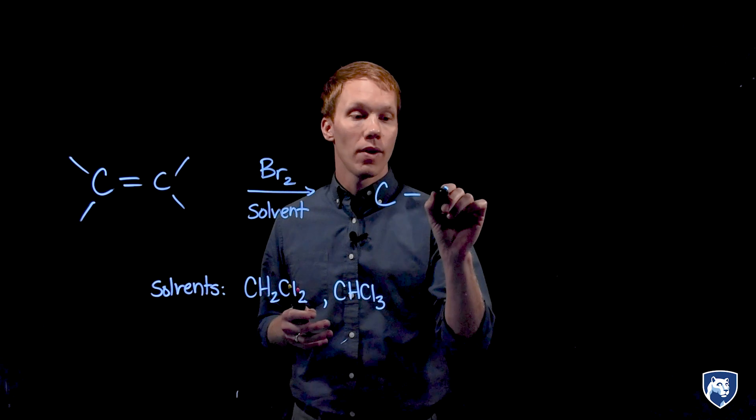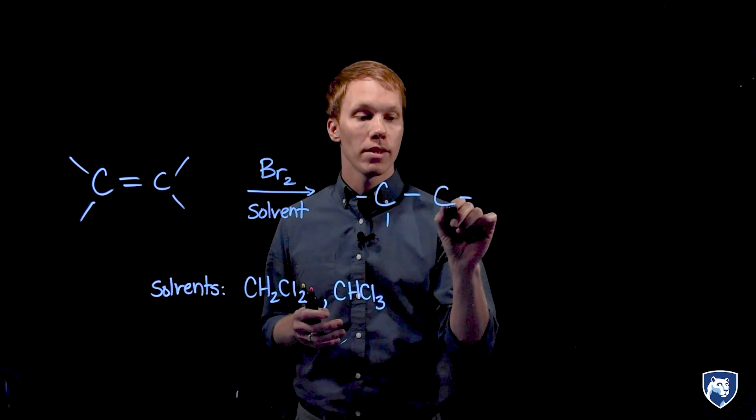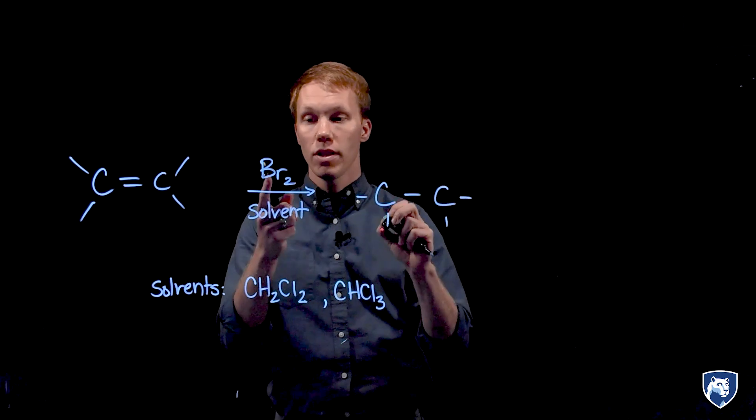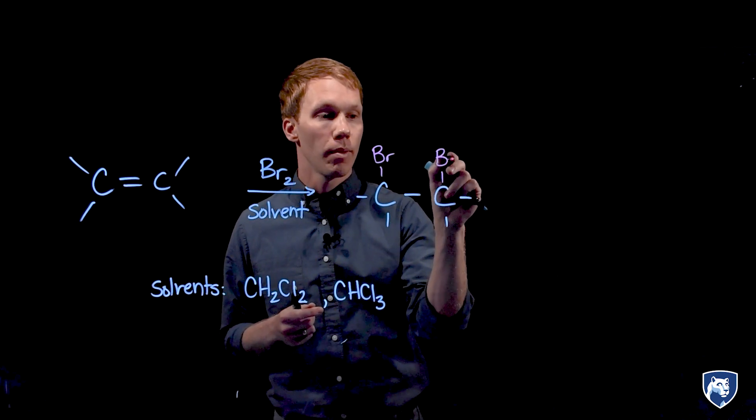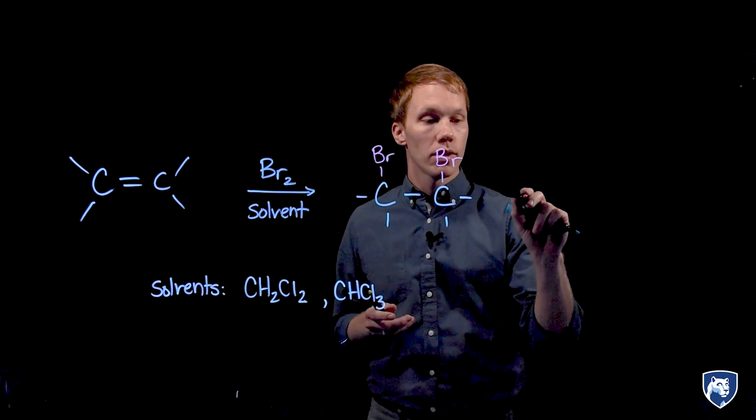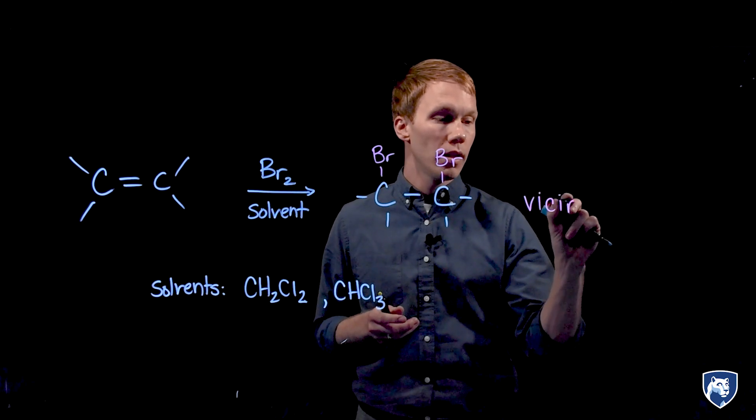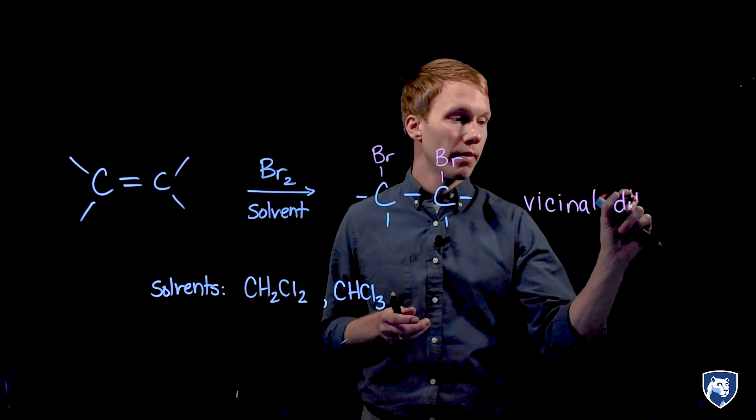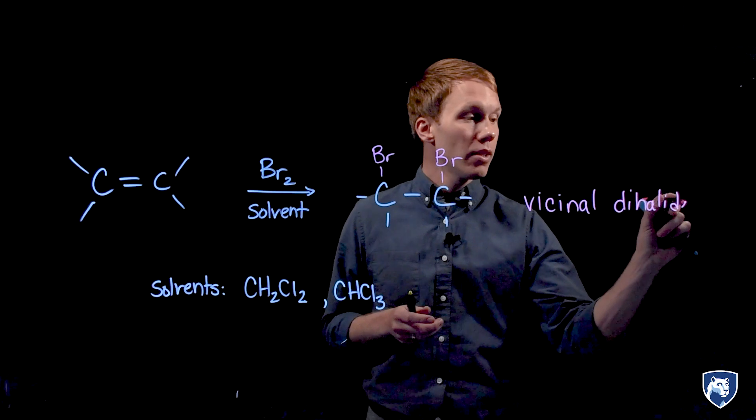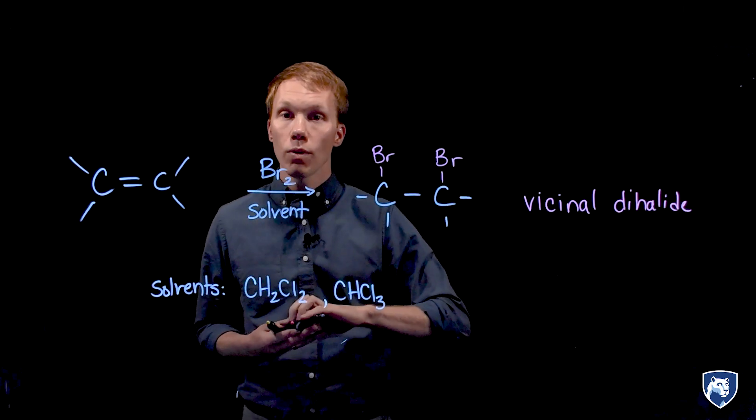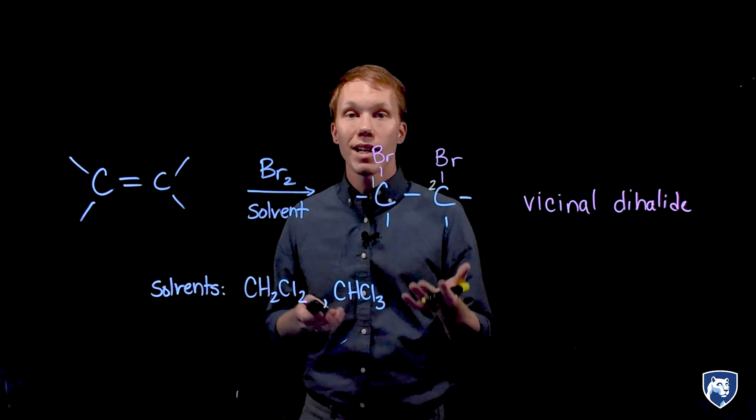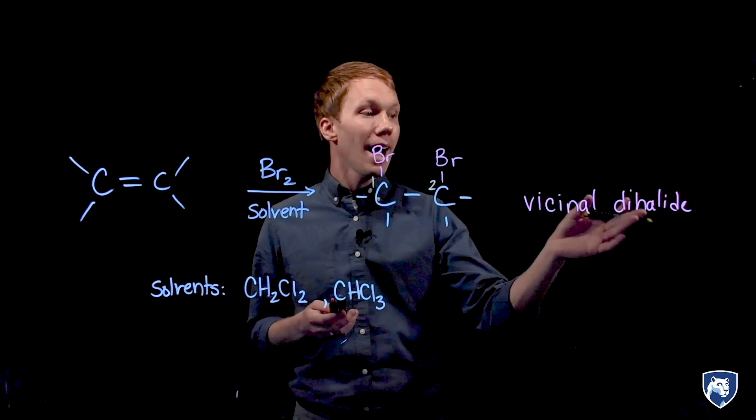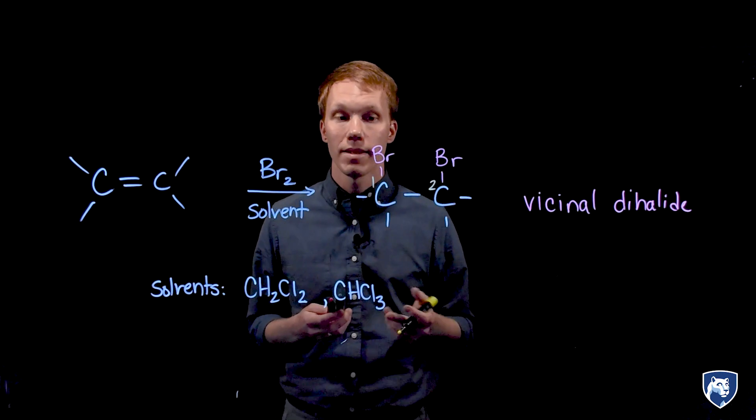As the name implies here, we're going to halogenate the alkene and place two halogens from my reagent on each carbon of that double bond. So this produces what is called a vicinal dihalide. Vicinal describes the 1-2 relationship of two groups. In other words, they're next door to each other. And dihalide, there are two halides.